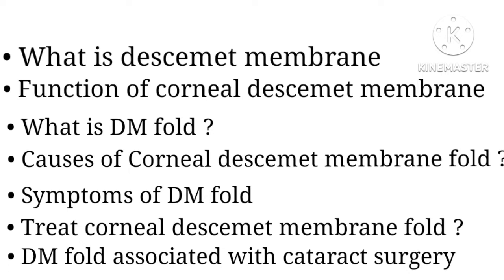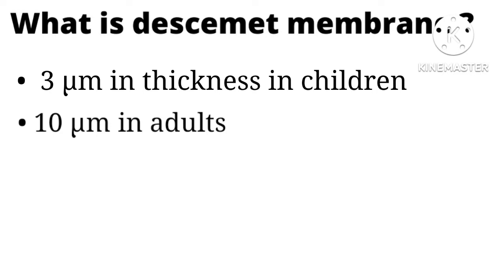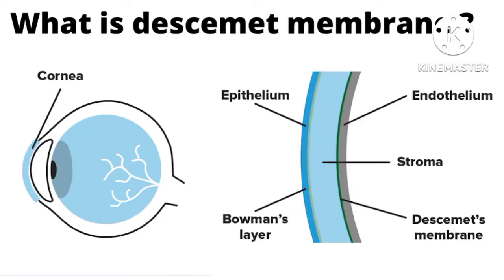First of all, what is Descemet's membrane? Descemet's membrane is the basement membrane that lies between the corneal stroma and the endothelium layer of the cornea. It is composed of a different kind of collagen than the stroma. Descemet's membrane is the basement membrane of the corneal endothelium and measures approximately 3 micrometers in thickness in children, gradually increasing to 10 micrometers in adults.